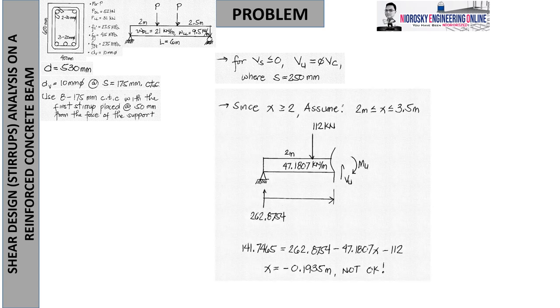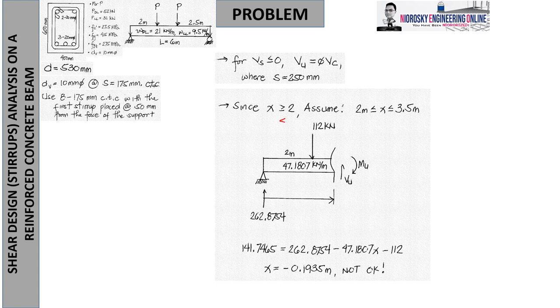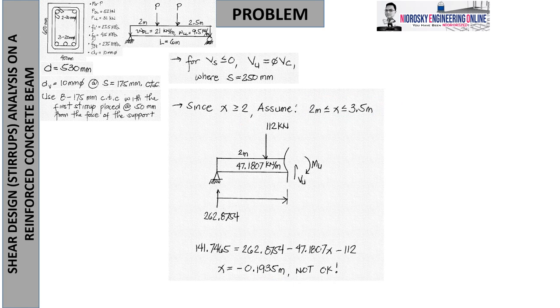If I assume x less than 2 but that is less than 3.5 as declared here, we got negative 0.1935. So again, not okay. You don't have to do this if it's obvious the value is not in our region to be analyzed.